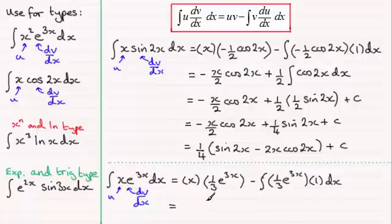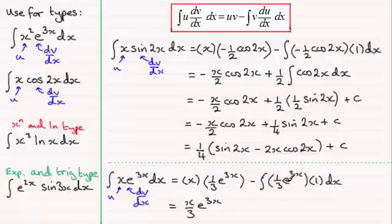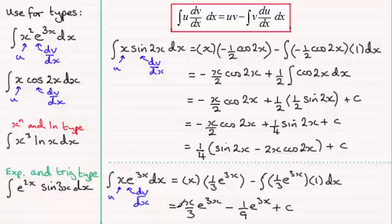We've got a third x, or x over 3, multiplied by e to the power 3x. Then for this last integral, it's the integral of a third e to the 3x, so that's a third times 1 third e to the power 3x — in other words, 1 ninth e to the power 3x. With the minus sign, it's minus 1 ninth e to the power 3x, plus the constant of integration c. It's up to you whether you clean that up further, but hopefully that gives you some idea of how to do it.